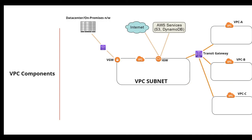AWS has a solution for non-transitive peering called Transit Gateway. Rather than establishing one-to-one VPC peering between every VPC, you create a Transit Gateway and attach all your VPCs to it — each connected VPC can then talk to every other. You can also use the Transit Gateway to establish SSL VPN connections with your on-premises data center instead of using a Virtual Gateway.